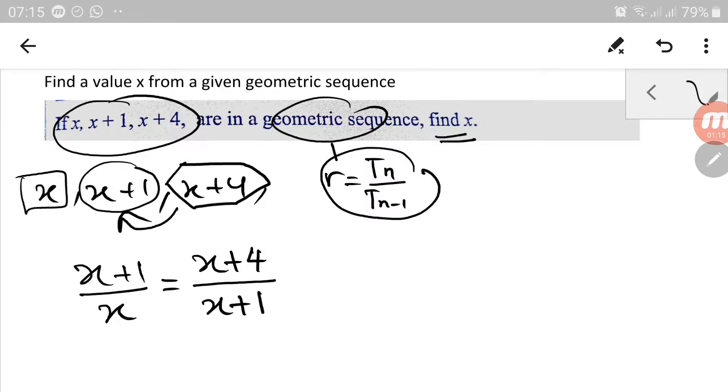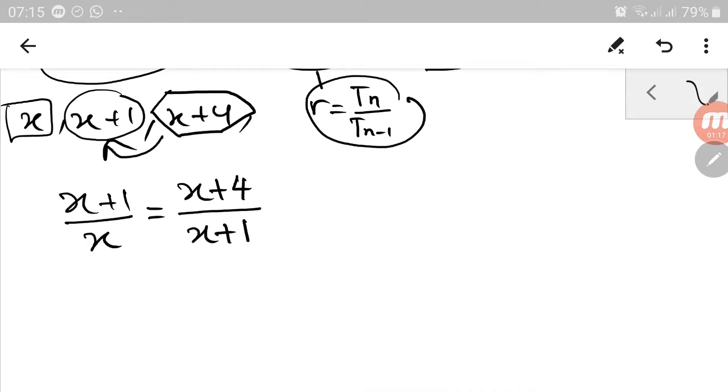Now, since we know this equation, we can cross multiply them. So this one goes over there. x plus 1 squared on the left-hand side equals x multiply x plus 4.